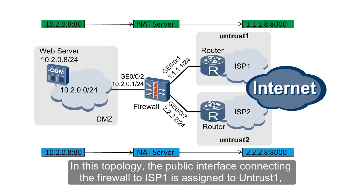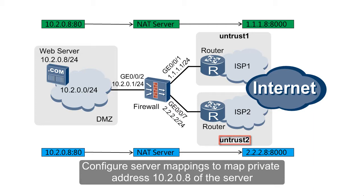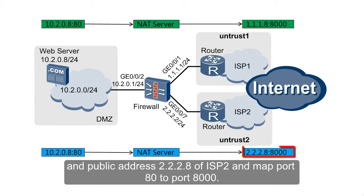In this topology, the public interface connecting the firewall to ISP1 is assigned to UNTRUST1, and the public interface connecting the firewall to ISP2 to UNTRUST2. Configure server mappings to map private address 10.2.0.8 of the server to public address 1.1.1.8 of ISP1 and public address 2.2.2.8 of ISP2, and map port 80 to port 8000.